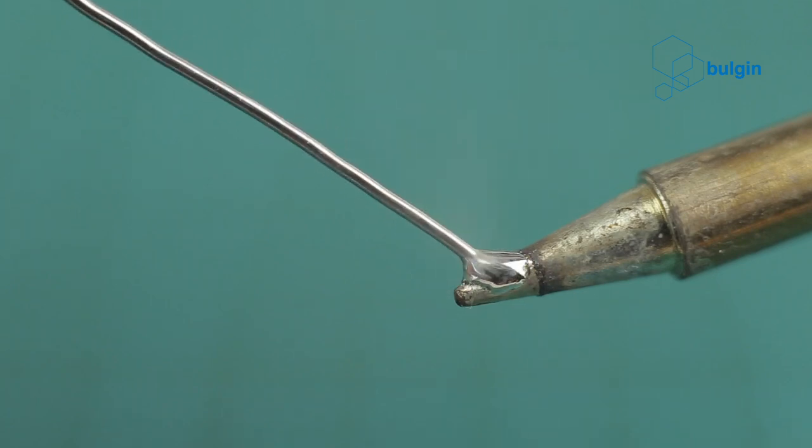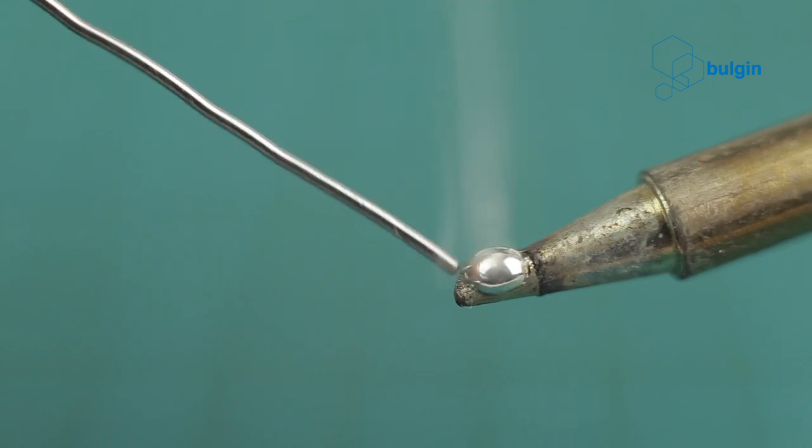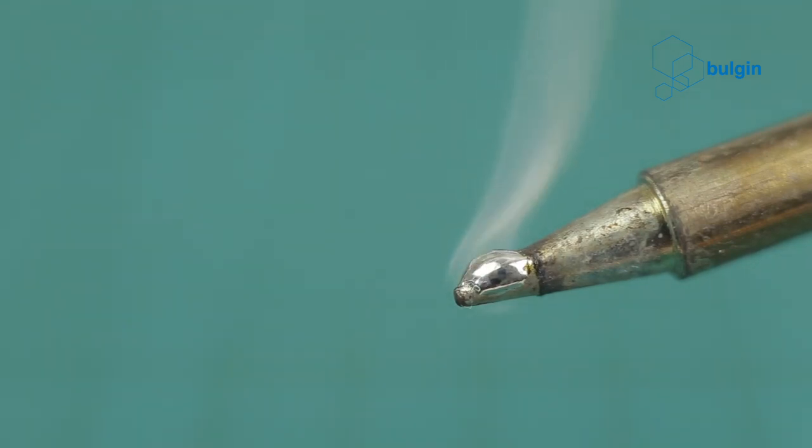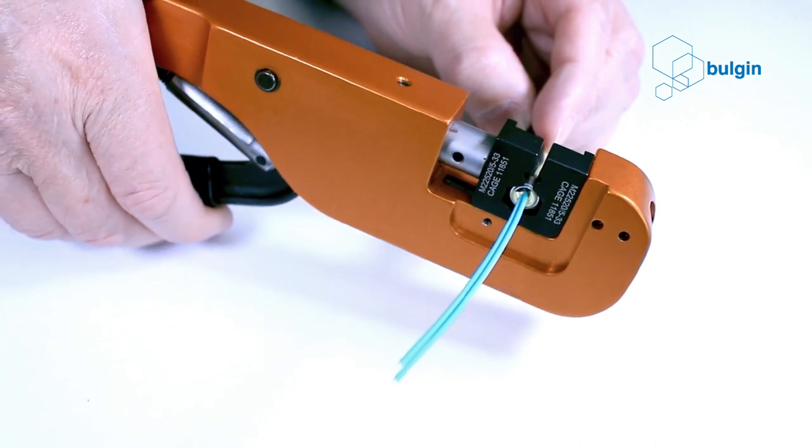However, soldering irons create high levels of heat, which means that solder might not be the right solution for field installation. Crimp connections are amongst the most secure of all methods.